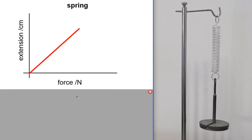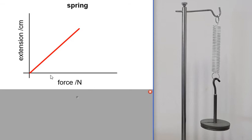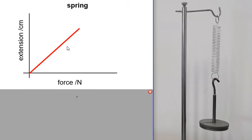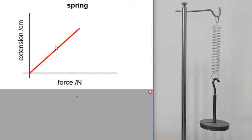For a spring, you might get something like this idealized graph: as you apply a greater and greater force, the extension increases, and this is a straight line through the origin. This shows a proportional relationship between force and extension — if you double the force you double the extension, if you triple the force you triple the extension.